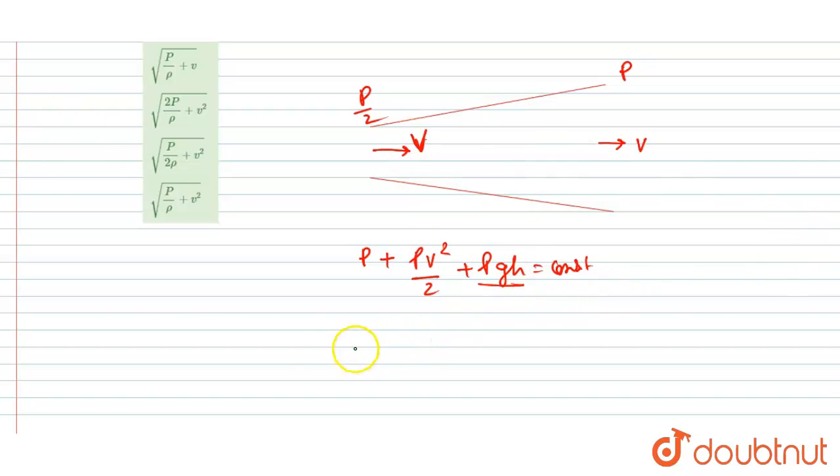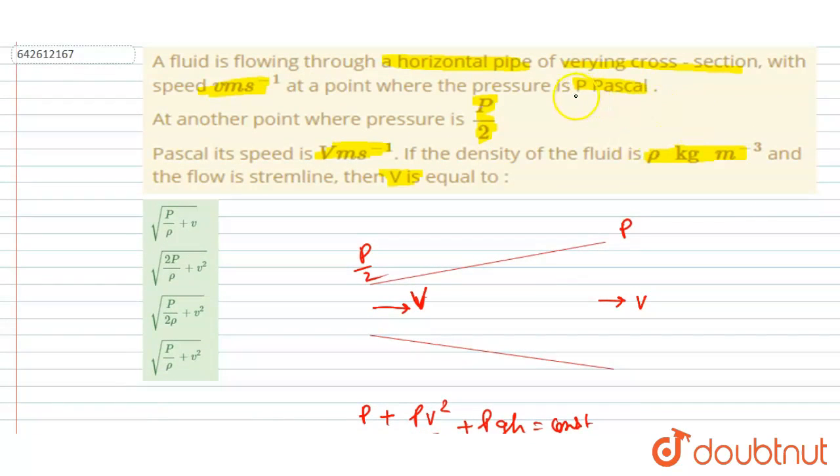So I will write p1 plus rho v square by 2 is equal to p2 plus rho v2 square by 2. Now you can put the p1 and p2 values. Initially the pressure was p and finally the pressure changed to p by 2.